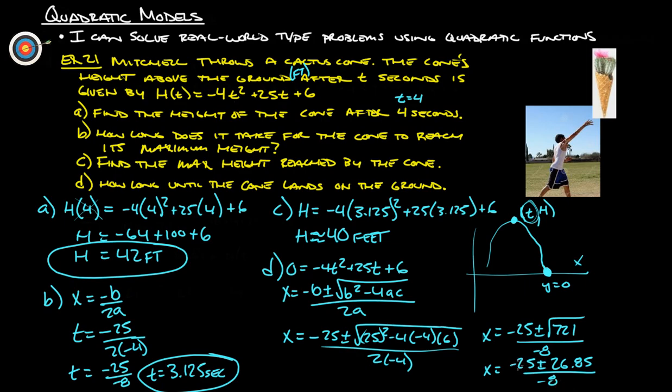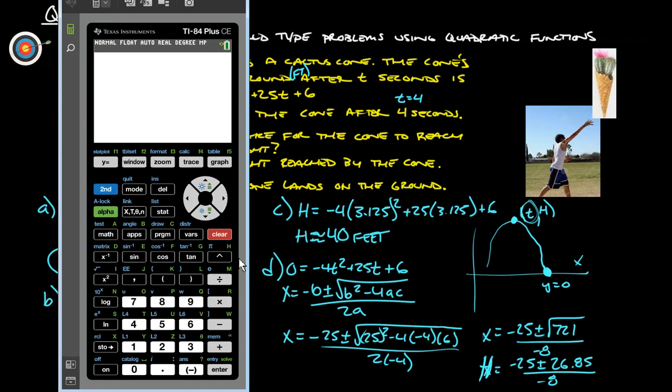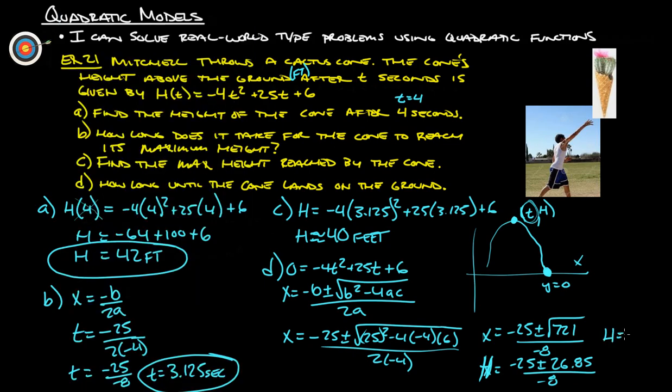So, here's the thing. If we do 25 plus 26.85, that's going to be a positive number divided by a negative number, and that is going to be our height below ground, and that would not make sense for what we're looking for. So, what we want to do is just simply do the negative 25 minus the 26.85 divided by negative 8. Just save ourselves some time. So, negative 25 minus 26.85 divided by negative 8, and we get 6.48. So, the time equals, time equals, so the time equals 6.48. So, we'll say time is about 6.5 seconds.